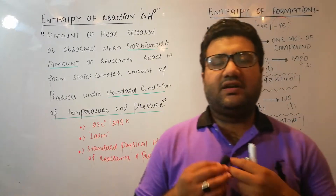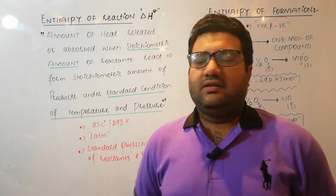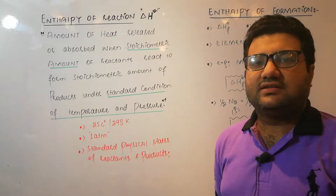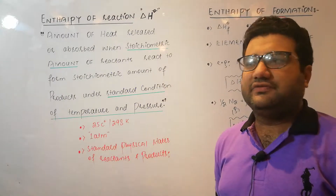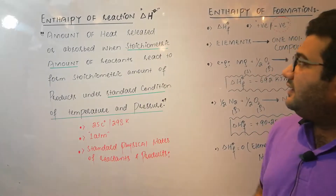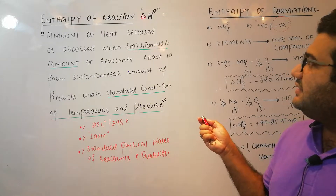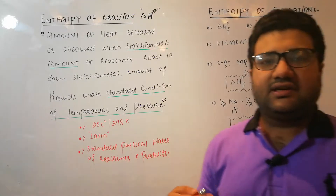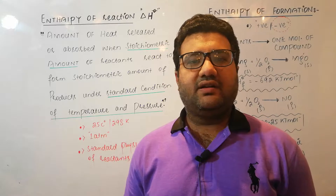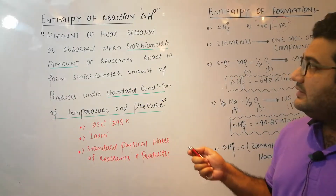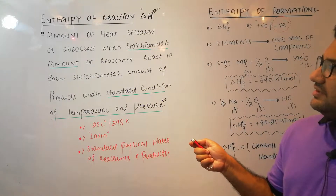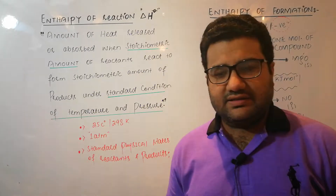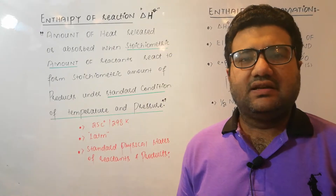Welcome everyone. Let's start the next topic which is the enthalpy of reaction, or you may also call it the standard enthalpy of reaction. The symbol delta shows change, H is for enthalpy, and the 'not' symbol shows standard, meaning we are working under standard conditions. The definition of enthalpy of reaction is the amount of heat released or absorbed — in some cases heat is released, those are exothermic cases, and in others heat is absorbed, those are endothermic cases.